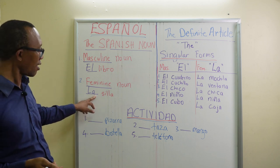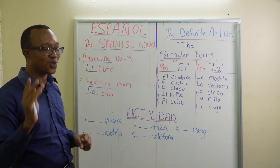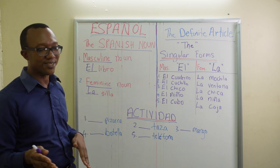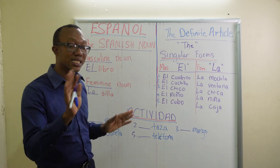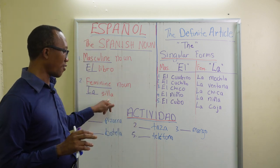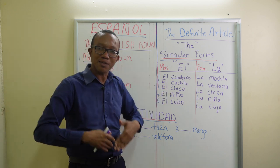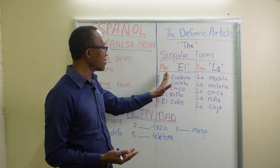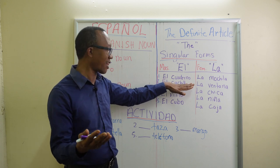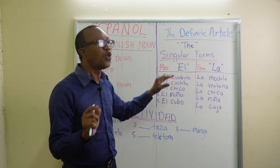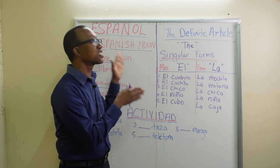Let's get some examples, because this is actually part one. In part two you will see other occasions where 'el' is used with a noun that doesn't necessarily end in 'o,' and vice versa with 'a.' So let's get some more examples so you can see the pattern. For the masculine, we have 'el cuaderno,' which means notebook.